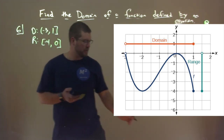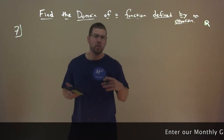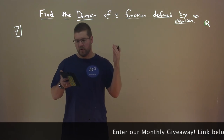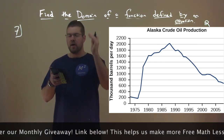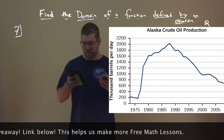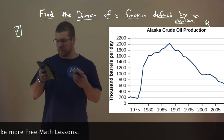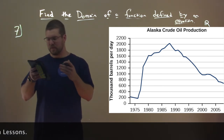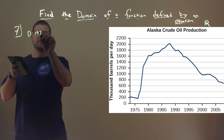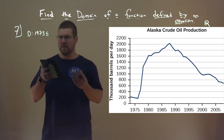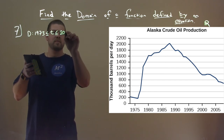Number 7: find the domain and range for the Alaska crude oil production graph, with years on the x-axis and thousands of barrels per day on the y-axis. The domain ranges from roughly 1972 — less than or equal to t — which is less than or equal to about 2008.